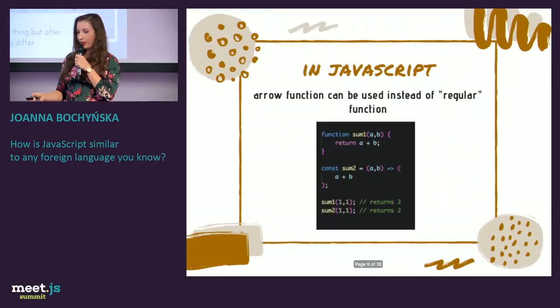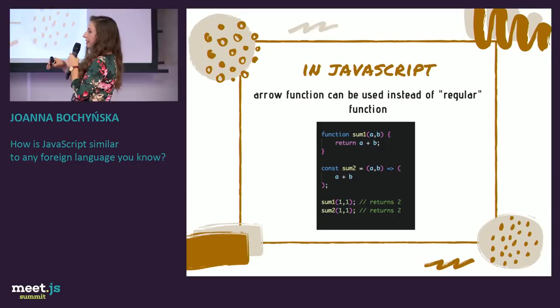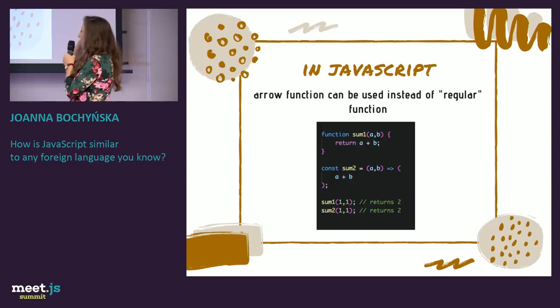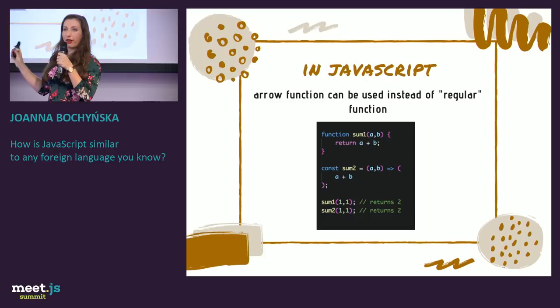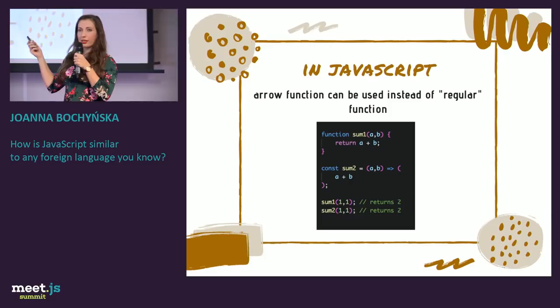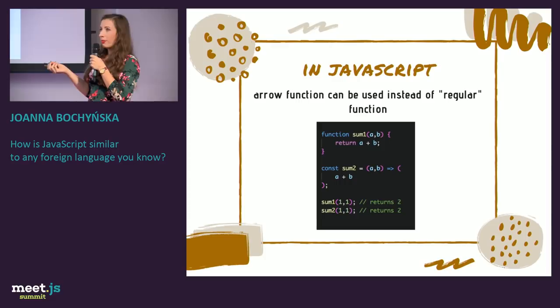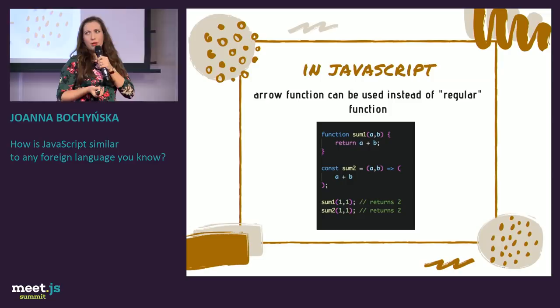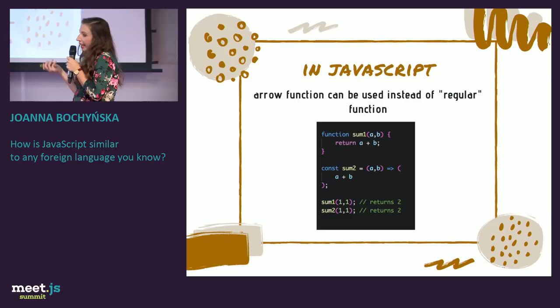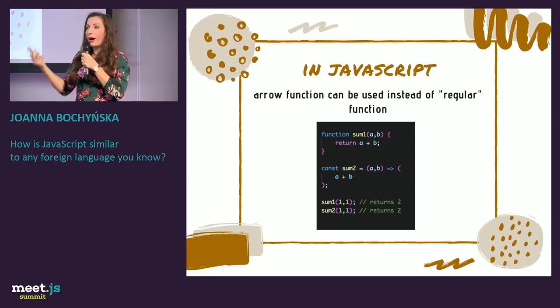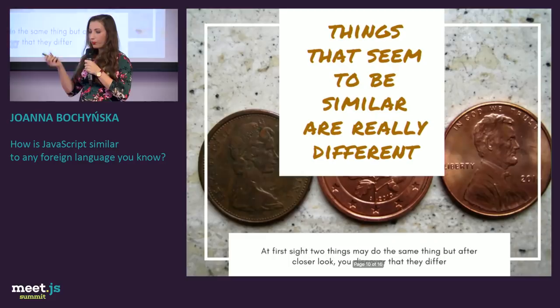In JavaScript, we have arrow functions. You can create a regular function that sums two elements and returns the sum, and you can have an arrow function that does exactly the same thing. But when you don't know what the arrow does in JavaScript, you won't understand why there are arrows — this was my first question as a junior developer: where did these arrows come from? Just like not knowing phrasal verbs, if you don't know the pattern, you won't understand what it does.